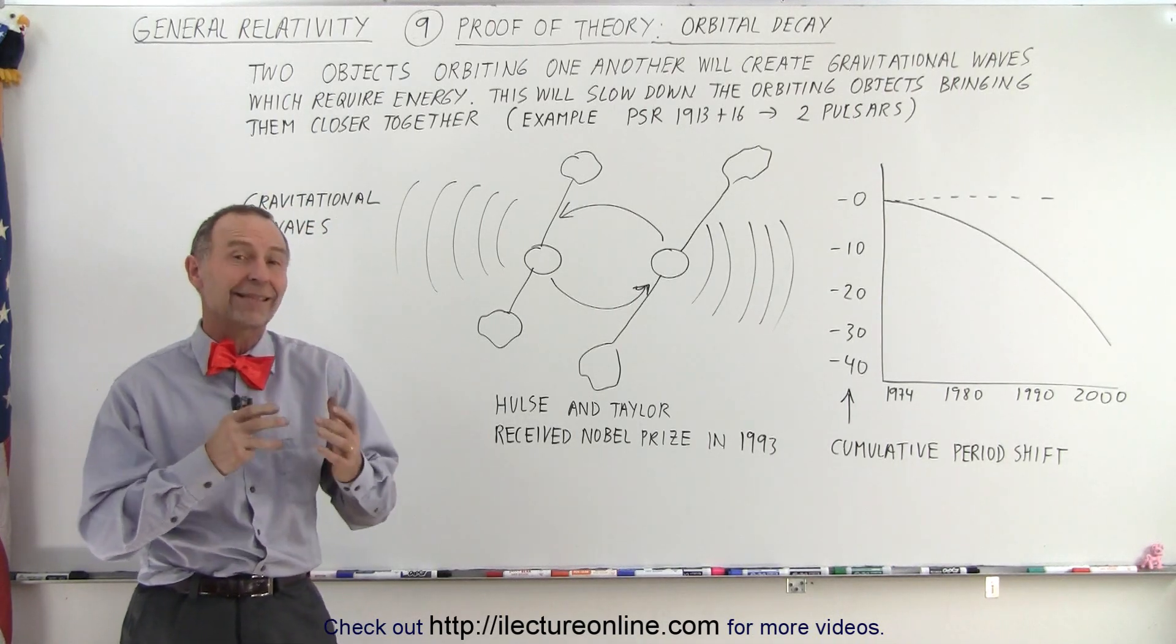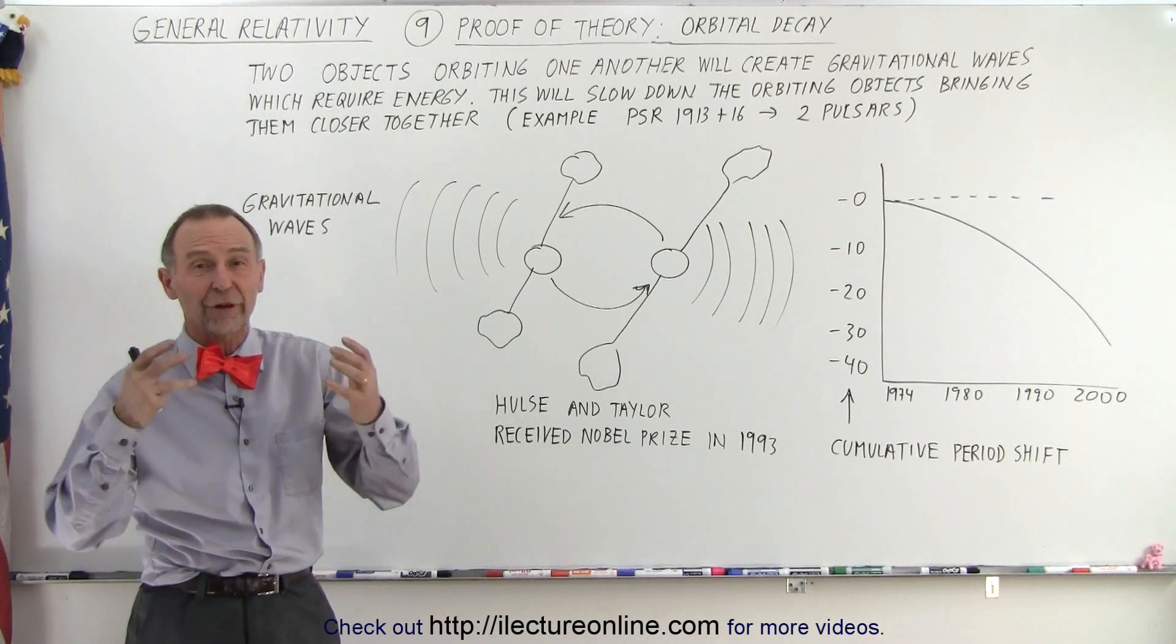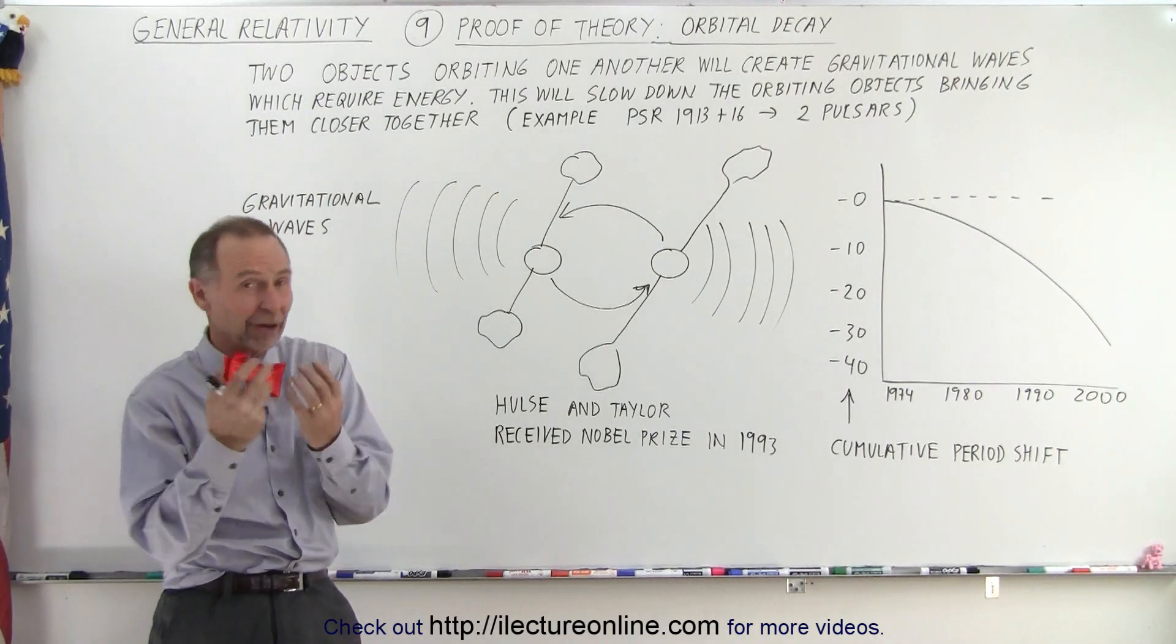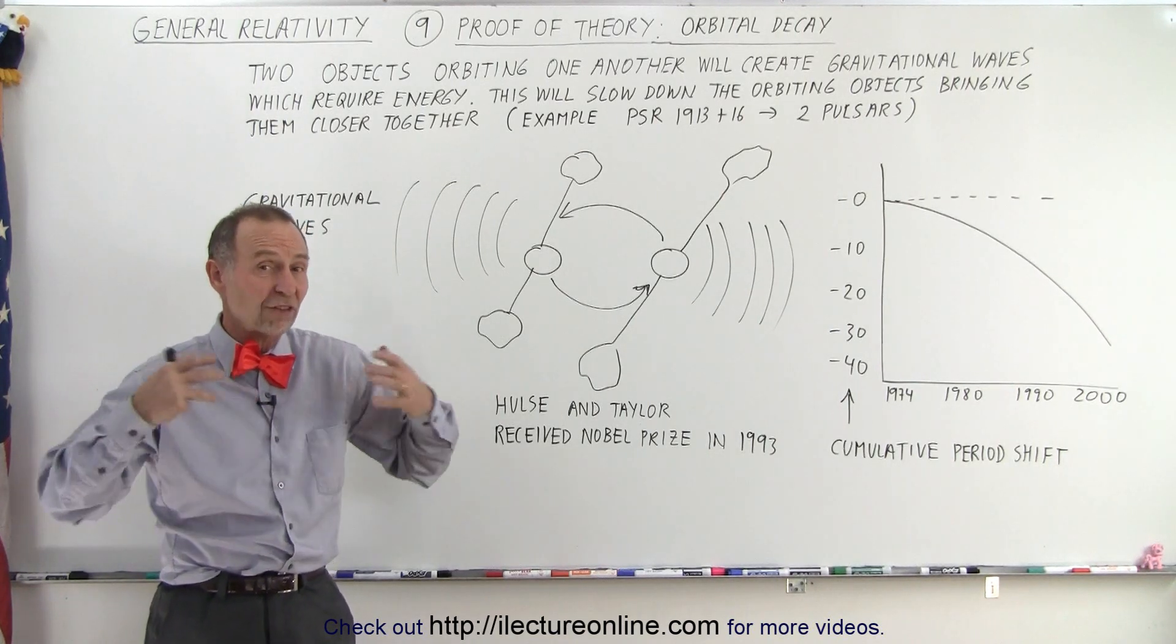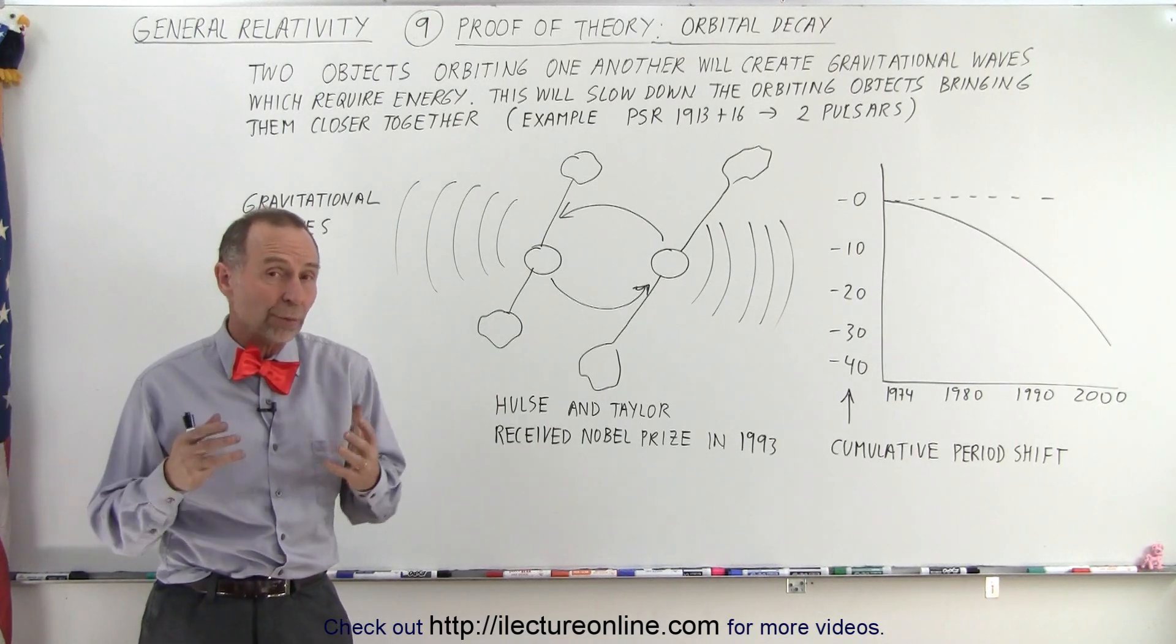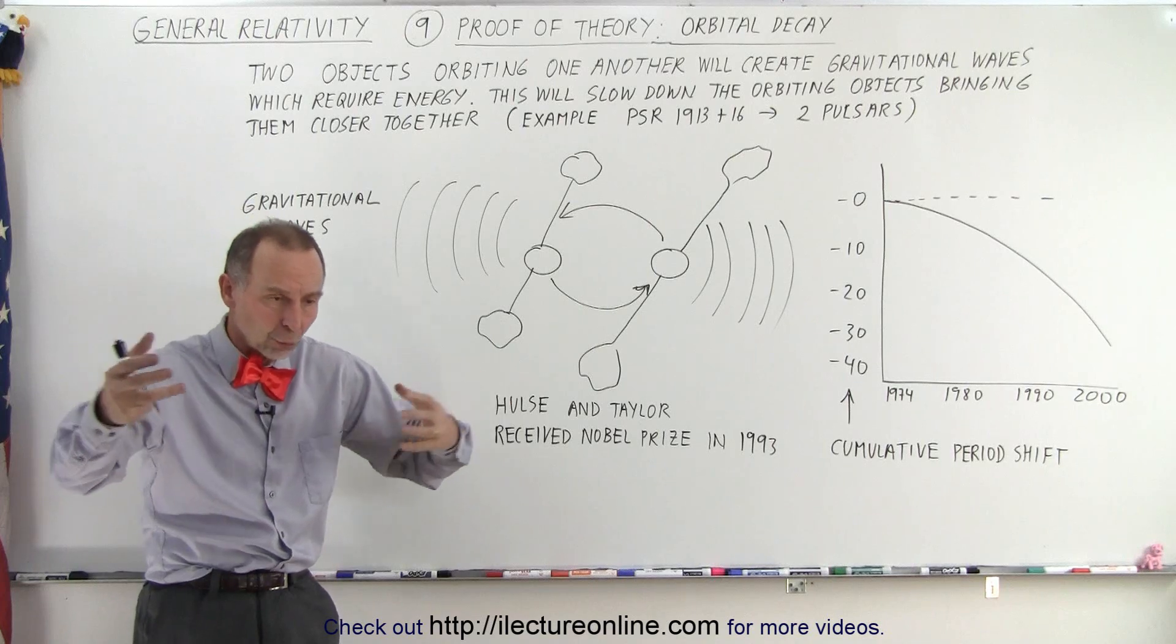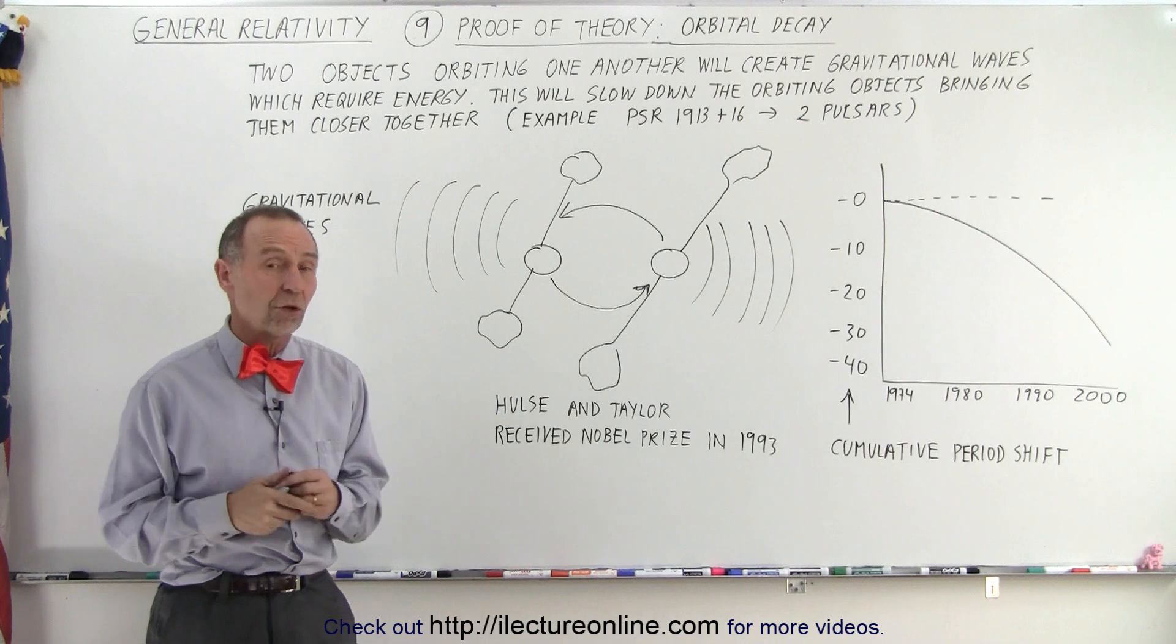They didn't detect at the time the actual gravitational waves that were predicted to exist, especially with very dense objects such as neutron stars. And so when neutron stars circle one another, essentially circling the barycenter between them, they would emit gravitational waves, and those gravitational waves would require energy. That leakage of energy as those gravitational waves were created would take the energy away from the neutron stars, and they would then essentially slow down. As they slow down, their orbits would then shrink. They would get closer and closer together as it travels slower and slower.